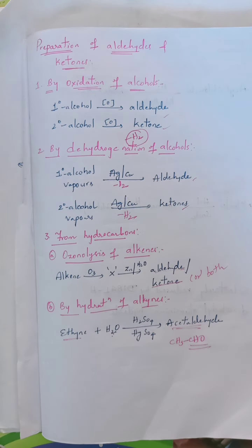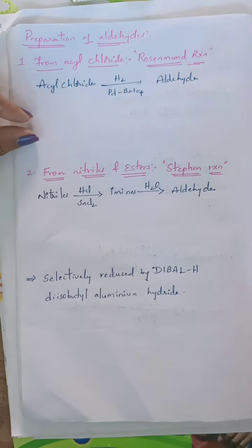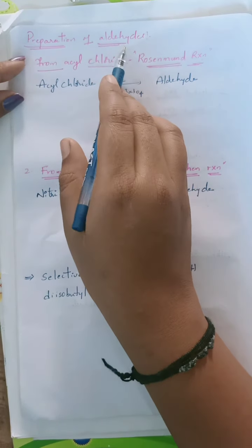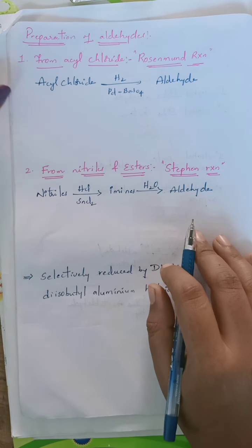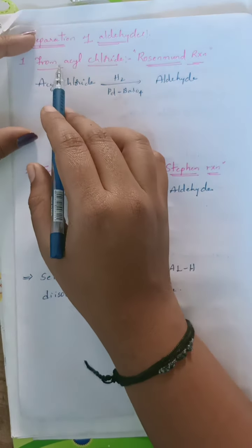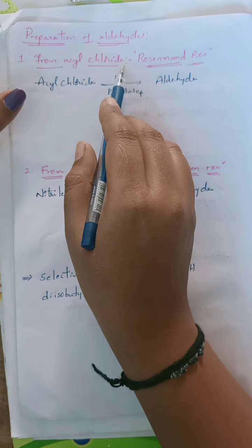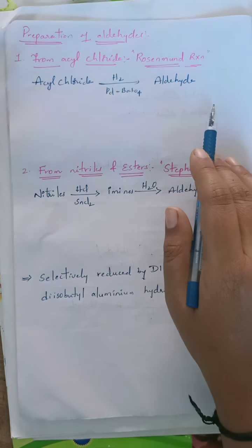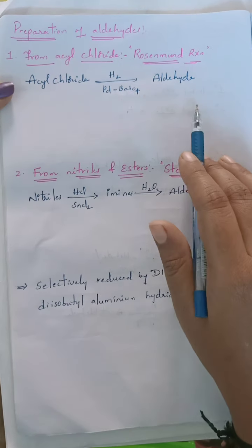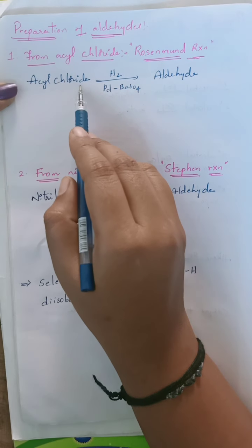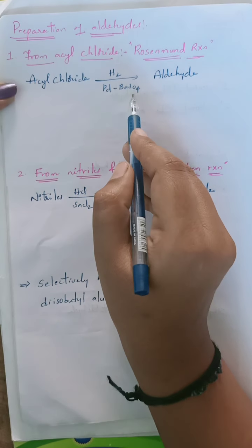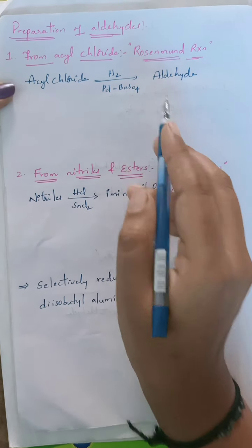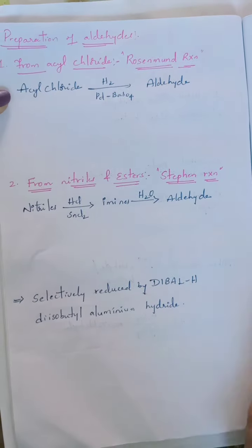Now we will see the methods used to prepare only aldehydes. The first method is from acyl chlorides — also known as the Rosenmund reaction. When acyl chloride undergoes hydrogenation in the presence of palladium and barium sulfide, it can be converted into an aldehyde. Taking an aromatic acyl chloride as an example, the C=O–Cl group undergoes this reaction.